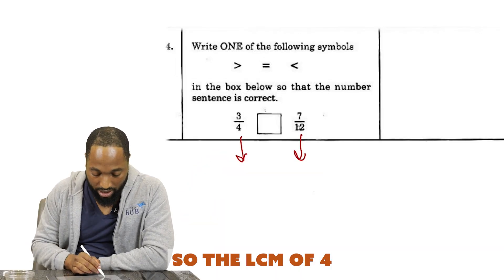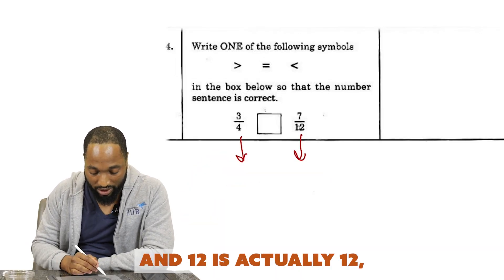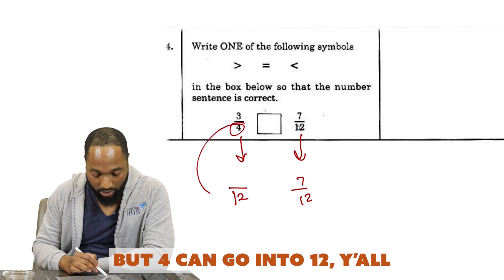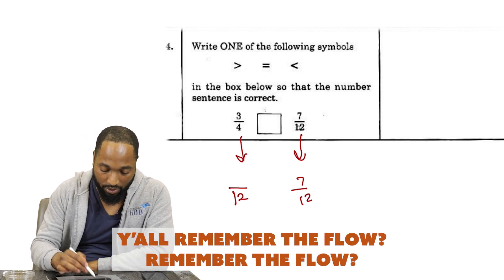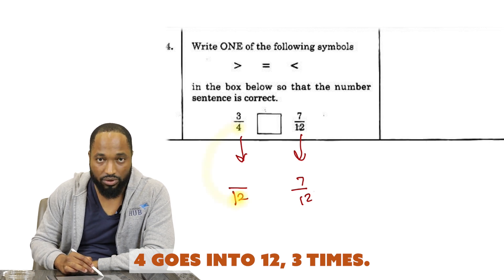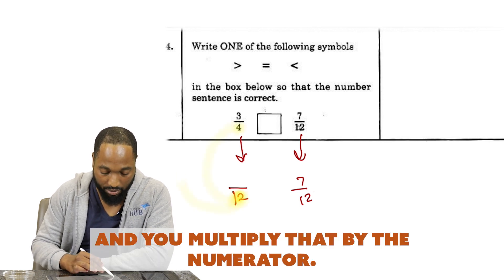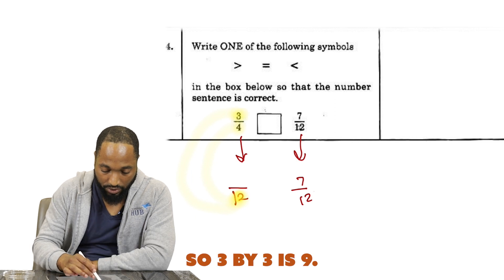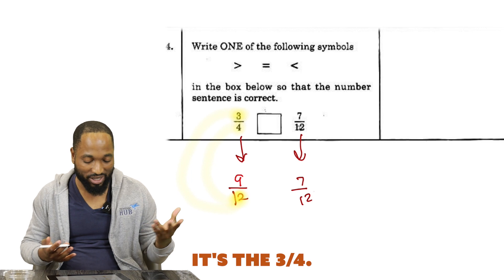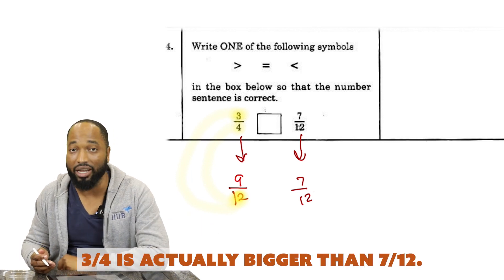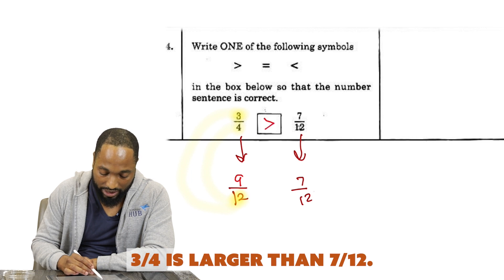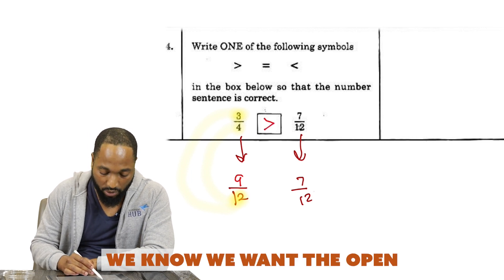The LCM of 4 and 12 is actually 12, so the 7/12 is going to remain. But 4 can go into 12—you remember the flow—4 goes into 12 three times, 3 times 4 is 12, and you multiply that by the numerator, so 3 by 3 is 9. So who is the bigger one now? It's the 3/4. 3/4 is actually bigger than 7/12, so we're going to use the greater than symbol. We want the open side to face 3/4.